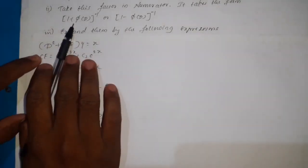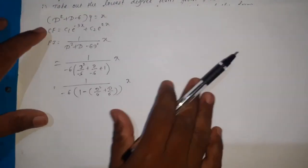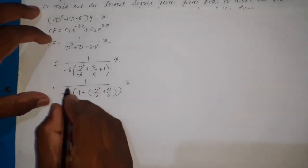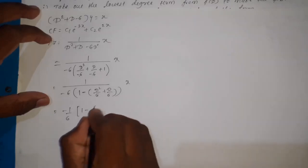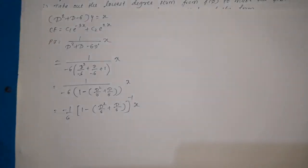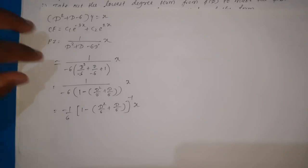Here the remaining factor is of the form 1 − φ(D). Taking that factor to the numerator, we get −1/6 × (1 − D²/6 + D/6)^(−1) × x. This is of the form (1 − x)^(−1), so we need to expand it. Since the power of x is 1, the derivative of x is 1 and the second order derivative of x is 0, so we consider only the first order derivative — all higher order derivatives are zero.